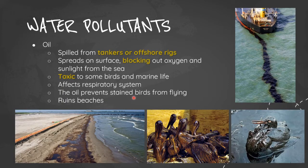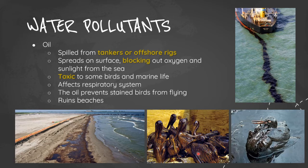Oil spills from tankers or offshore rigs cause the oil to spread on the surface, blocking oxygen and sunlight from the sea. Oil is toxic to birds and marine life, staining birds and preventing them from flying, affecting their respiratory systems. It also ruins beaches, negatively affecting the tourism industry.